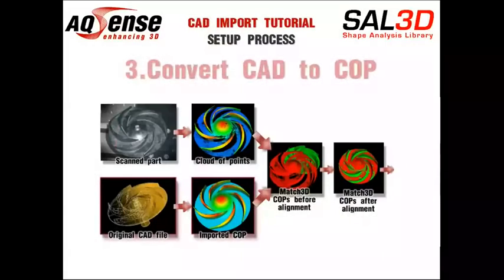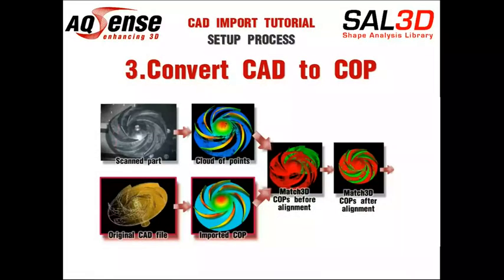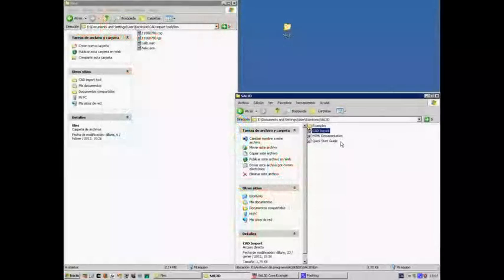We will now take the CAD file and convert the surface of interest into a cloud of points, so that it can be used by Match3D, the SAW3D surface aligner. Every scan will come over the conveyor in a slightly different orientation, so we will use Match3D to align the pieces prior to each comparison. The Match3D tool works with clouds of points, not with CAD drawings. We can get a cloud of points surface from a CAD drawing using the CAD import tool.